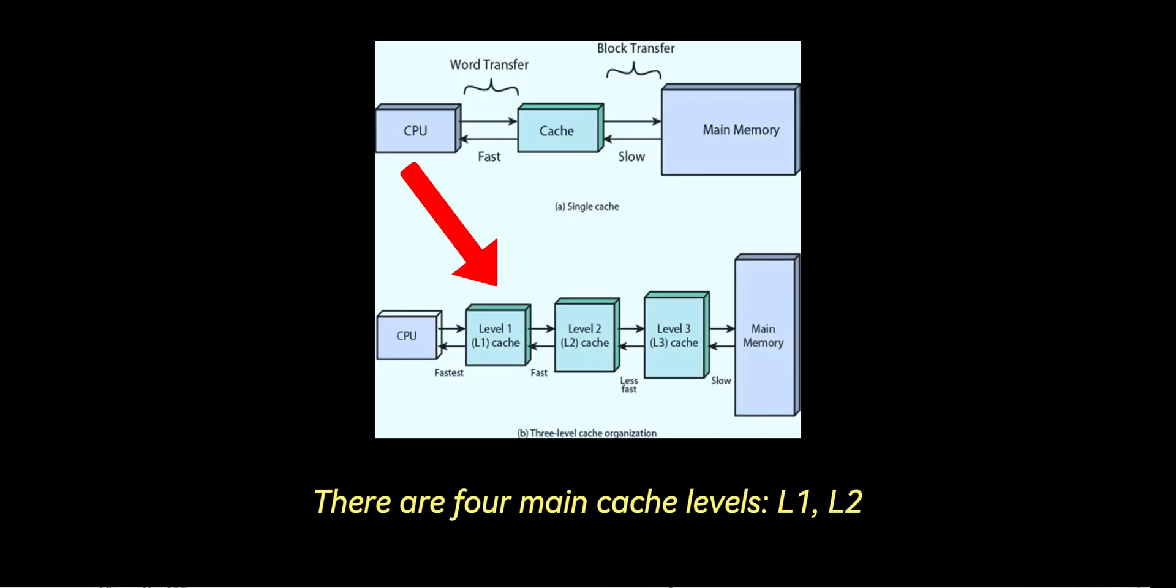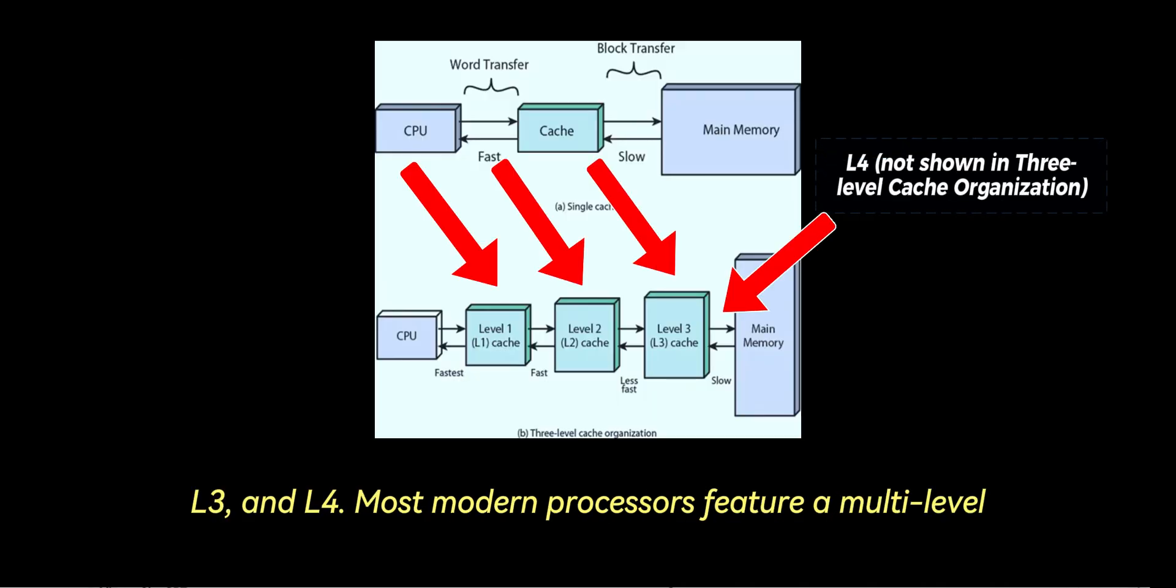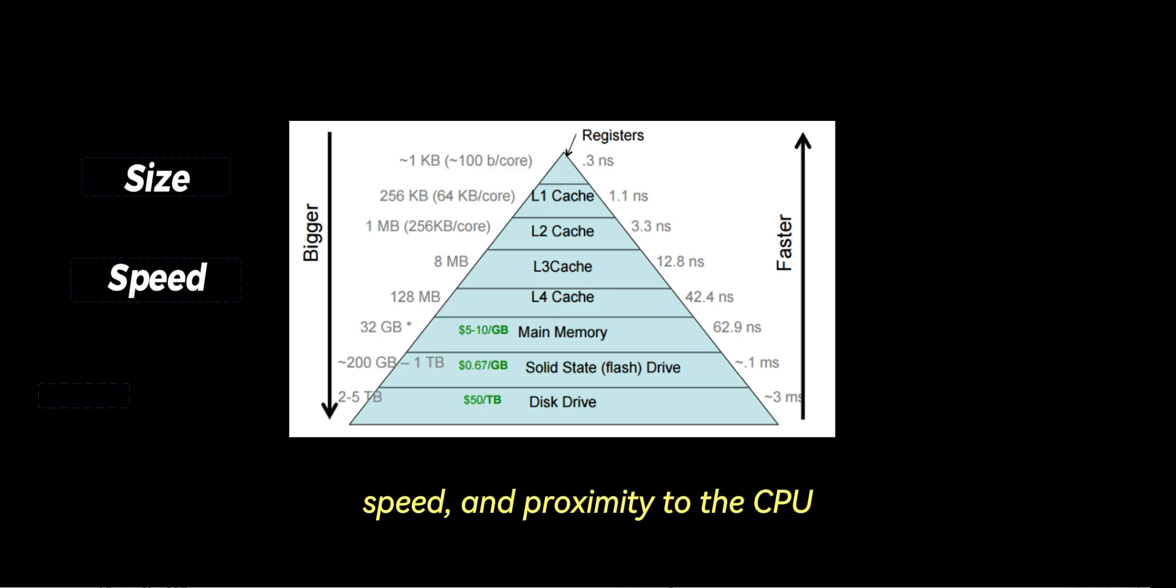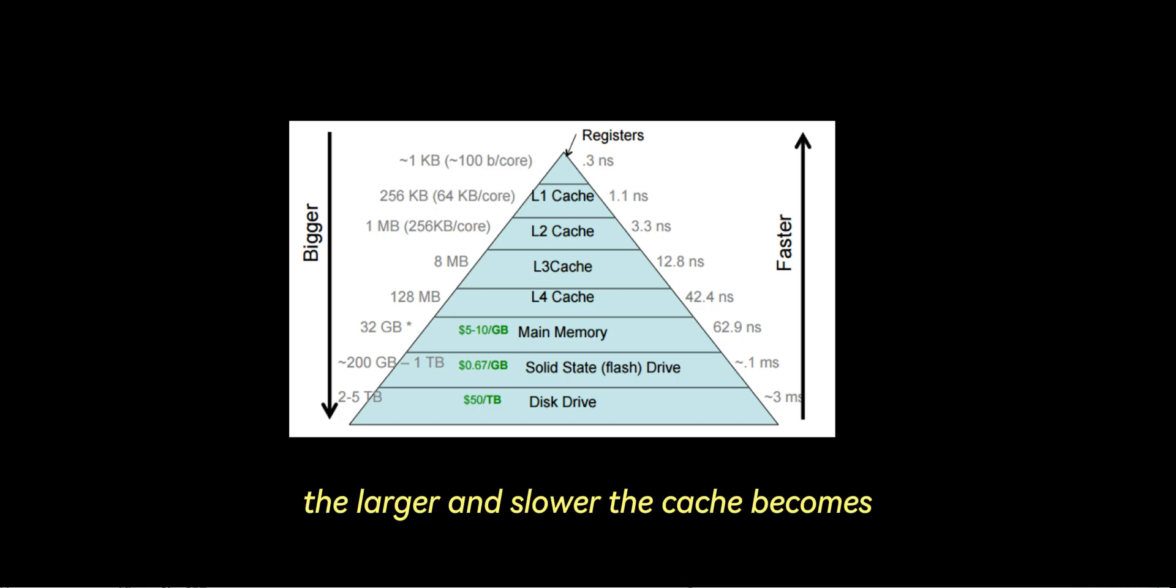There are four main cache levels: L1, L2, L3, and L4. Most modern processors feature a multi-level cache hierarchy, with each level varying in size, speed, and proximity to the CPU. The higher the cache level—L1, L2, L3—the larger and slower the cache becomes, but it can store more data.